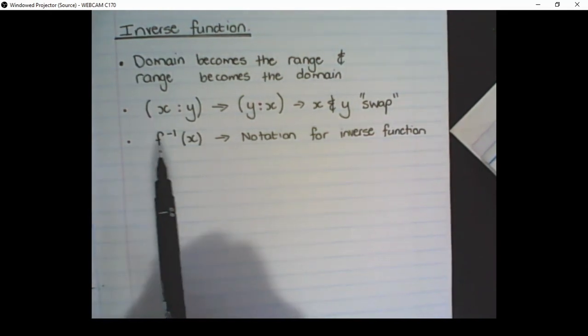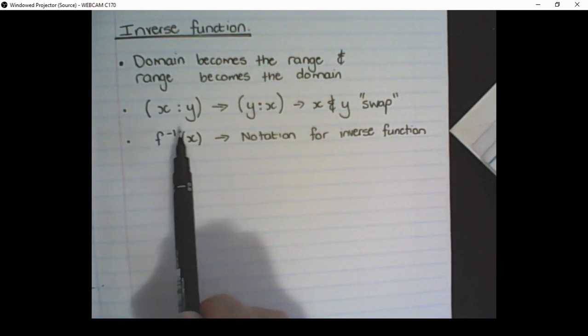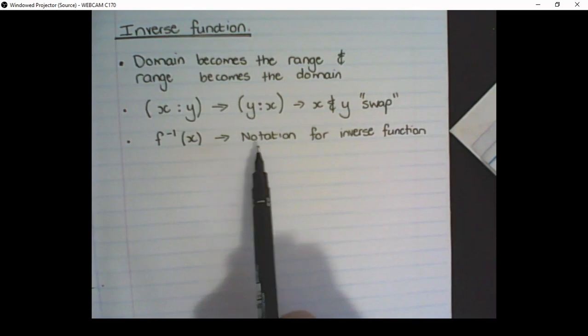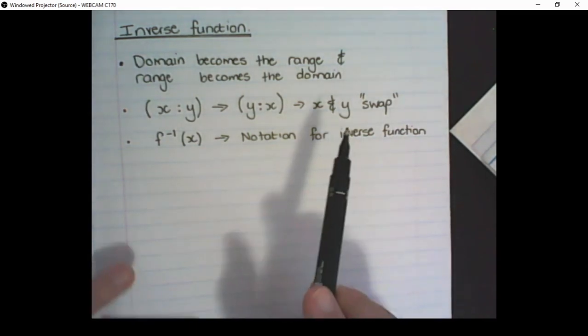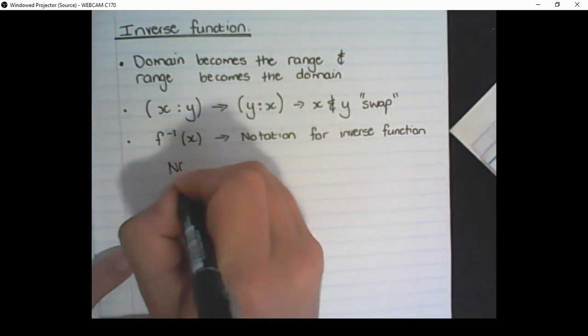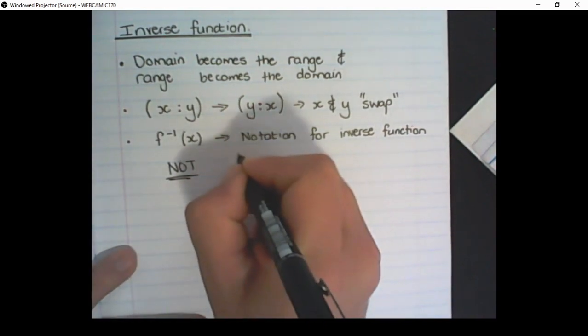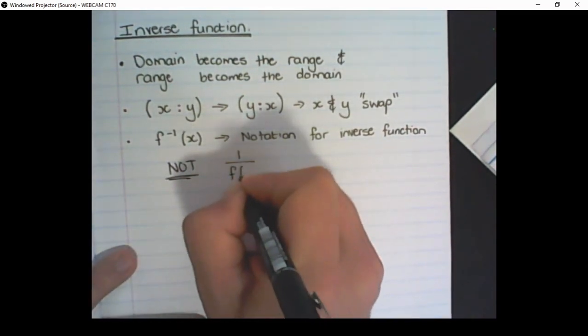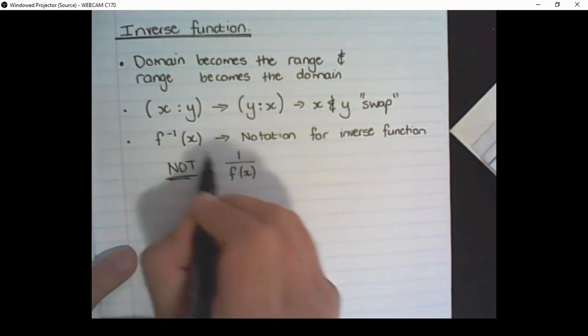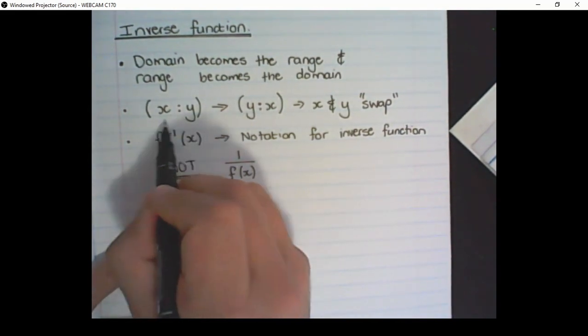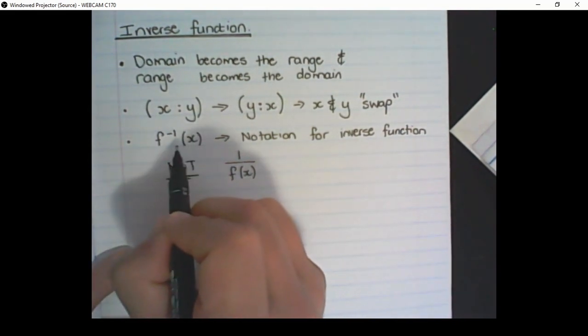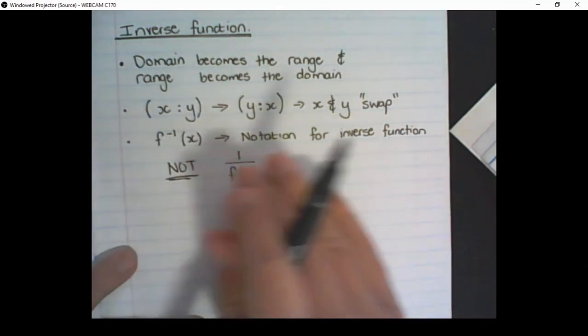The notation that we use is the function to the power of negative 1. That's the way we write it of f(x). And this is the notation for the inverse function. This is not 1 over f(x). This is not the same thing. It's important. This is simply the notation that we use to show the inverse function.